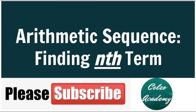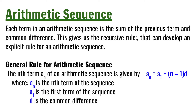Today we're going to learn about arithmetic sequences. We are going to find the indicated nth term given an arithmetic sequence. Each term in an arithmetic sequence is the sum of the previous term and the common difference. This gives us the recursive rule that can develop an explicit rule for an arithmetic sequence.